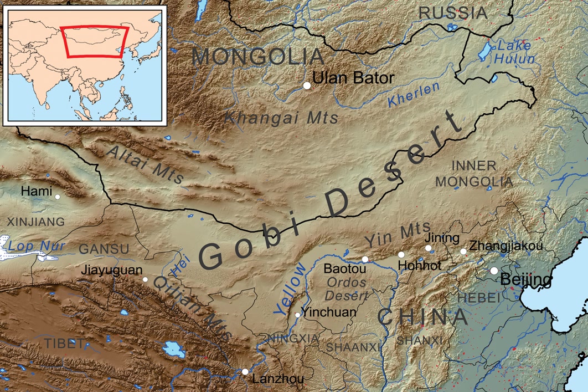The Gobi Desert is a large desert region in Asia. It covers parts of northern and northwestern China, and of southern Mongolia.